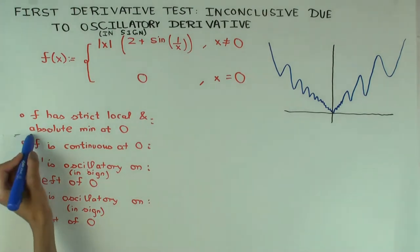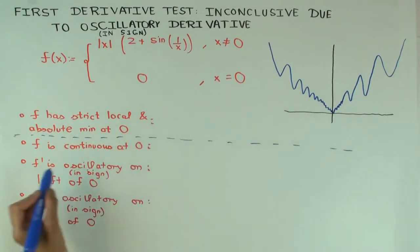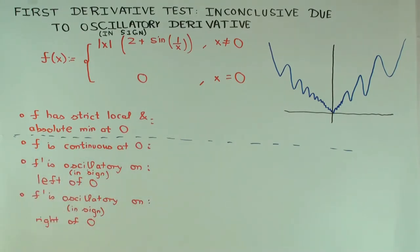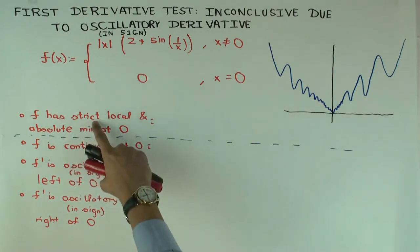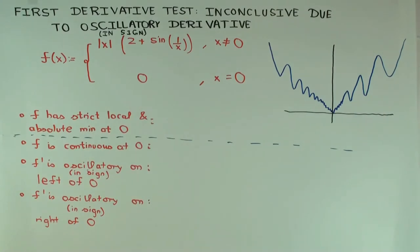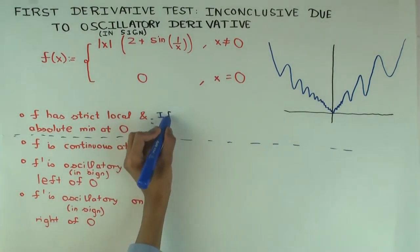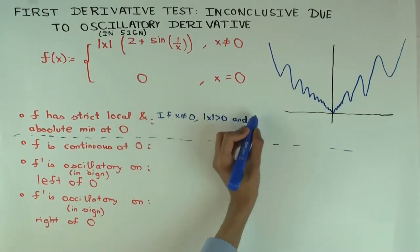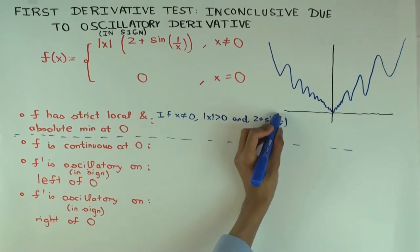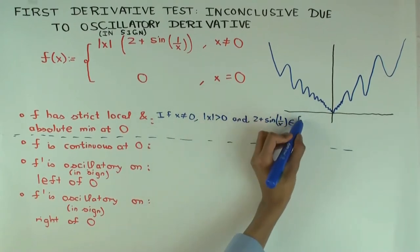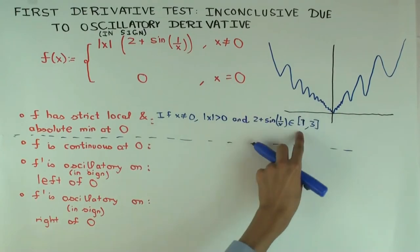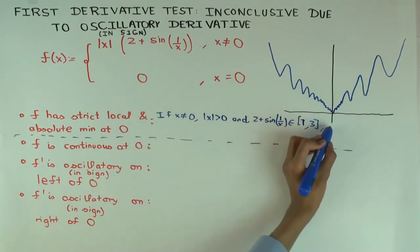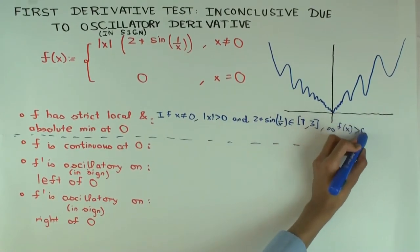Why is that? Why is it less at zero than everywhere else? Well, if x is non-zero — whether positive or negative — then |x| is greater than zero. And 2 plus sin(1/x): where does that land? Between 1 and 3, because sin oscillates between -1 and 1, giving 2 minus 1 and 2 plus 1. So you're multiplying a positive number by a positive number, and the product is positive.